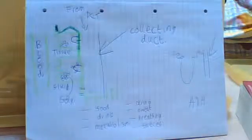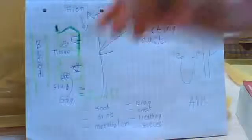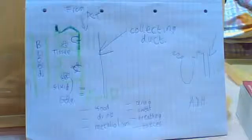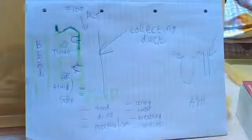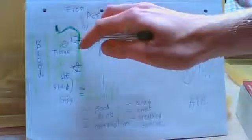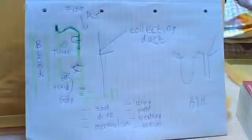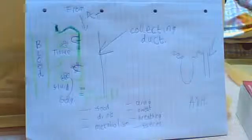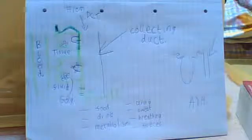Vesicles are basically packages. And what happens is, these aquaporins are manufactured in these cells lining the collecting duct, and then they have to be assembled into vesicles in order to be placed in the cell membrane. So, they're packaged into these secretory vesicles, which are used to increase the permeability of the walls of the collecting duct cells.